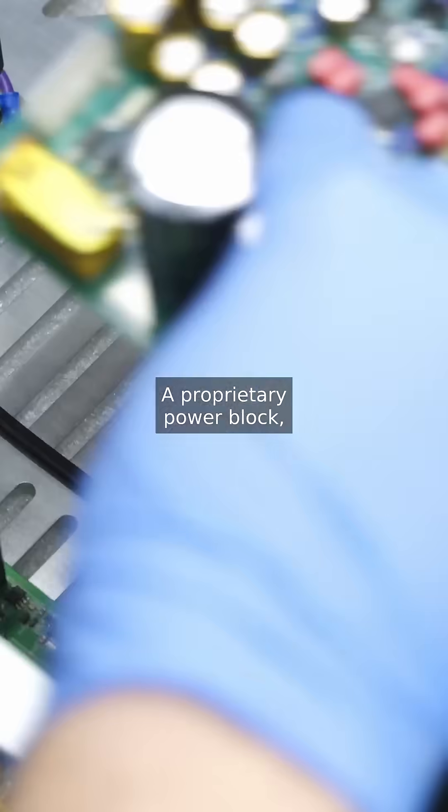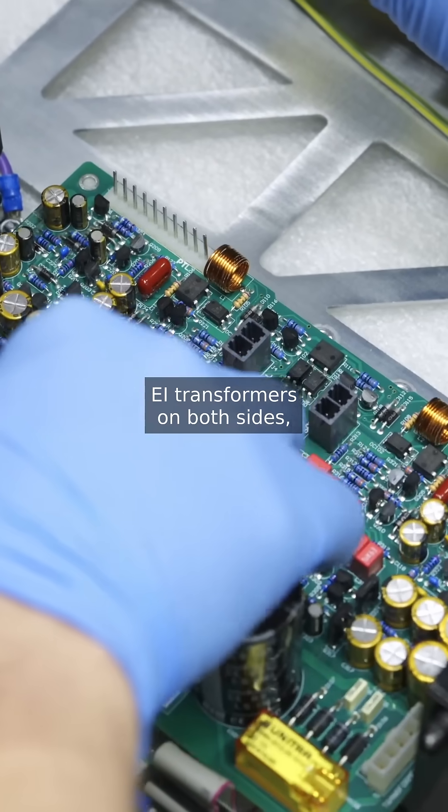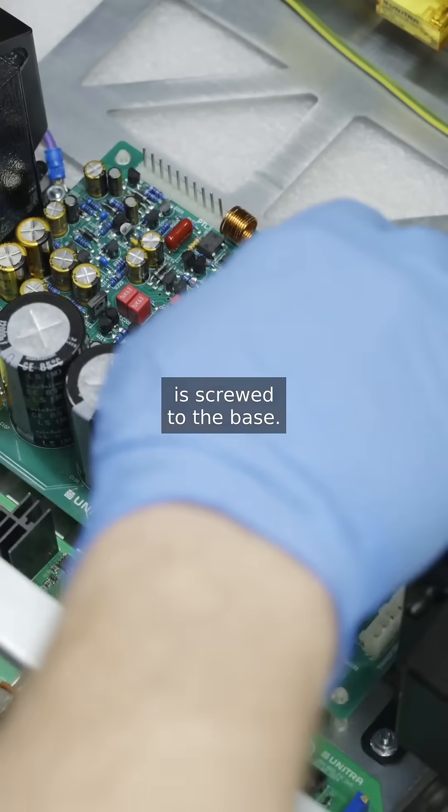A proprietary power block, powered by two separate EI transformers on both sides, is screwed to the base.